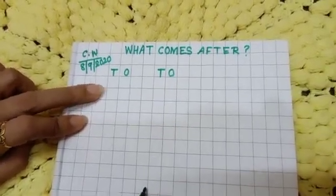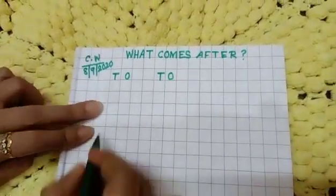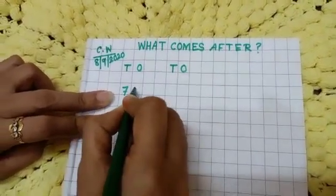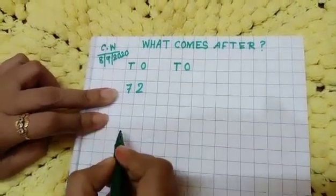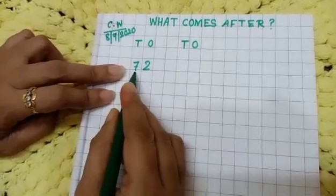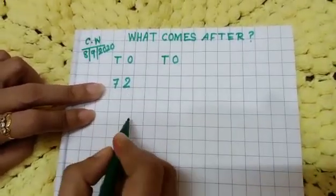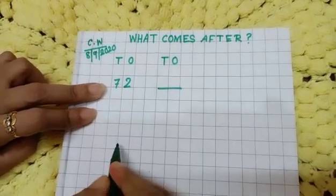Okay, then again you leave one box and write here 7-2, 72, 7 to 72 dash. So what will be the answer? 72, next number you will write here. Okay children.